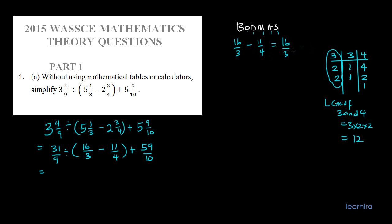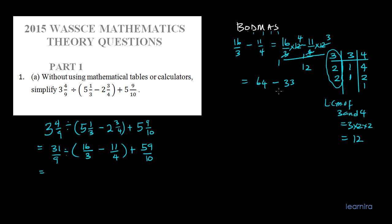We multiply: 16 over 3 times 12, minus 11 over 4 times 12, all divided by 12. Since 3 goes into 12 four times, we get 16 × 4 = 64. Since 4 goes into 12 three times, we get 11 × 3 = 33. So we have 64 minus 33 = 31, all over 12. We bring this result down.